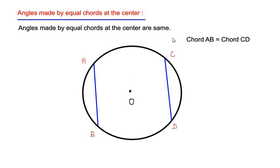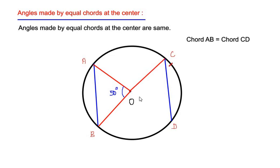are the same. For example, if through chord AB an angle is made at the center, say 50 degrees, then the angle made by its equal chord CD at center O is also going to be 50 degrees. So this theorem states that angles made by equal chords at the center are the same.